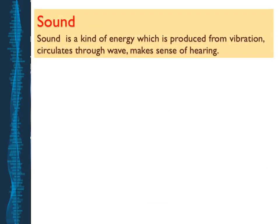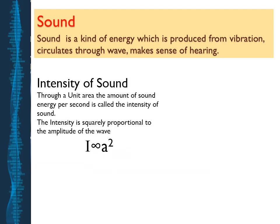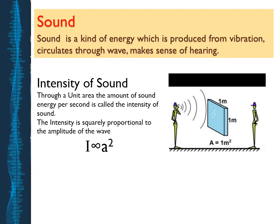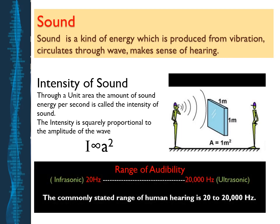Next is the topic of sound. Sound is a kind of energy which is produced from vibration, circulates through waves, and creates the sense of hearing. What is the intensity of sound? Through a unit area, the amount of sound energy per second is called the intensity of sound. For example, an area of one meter by one meter (one square meter) — the sound passing through this area within one second is the intensity of sound. The intensity of sound depends on the amplitude of the wave. The more the amplitude, the more the intensity. The relation is I ∝ A², meaning intensity is proportional to the square of the amplitude.